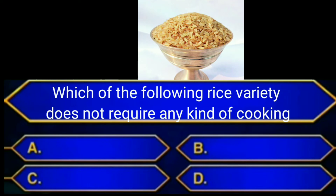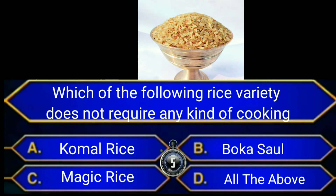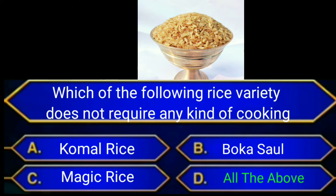Which of the following rice varieties does not require any kind of cooking? A. Copu rice, B. Out, C. Magic rice, D. All the above. Answer is option D: All the above. This special rice is also called magical rice or Bukasot. It is obtained from Azzam and does not require any kind of cooking — simply soak it in water and it will be ready to eat in a few minutes.